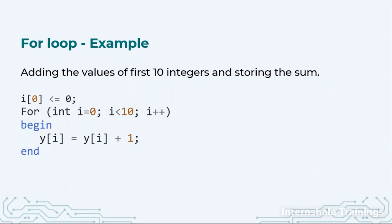So I say for int i equal to 0 to i less than 10, that means it will go only till 9. i++ means increment by 1. So this loop will run for 10 times. In every iteration we are adding the value and keep storing it in the variable y. So this is how for loop works.